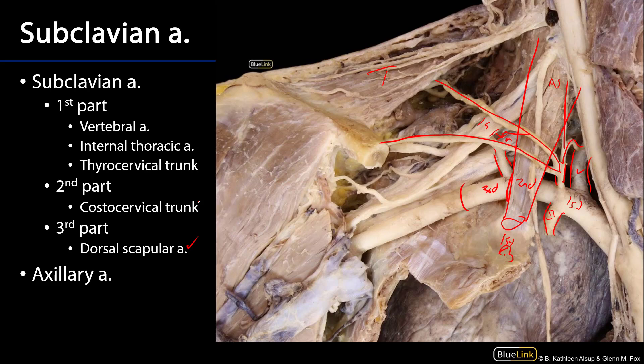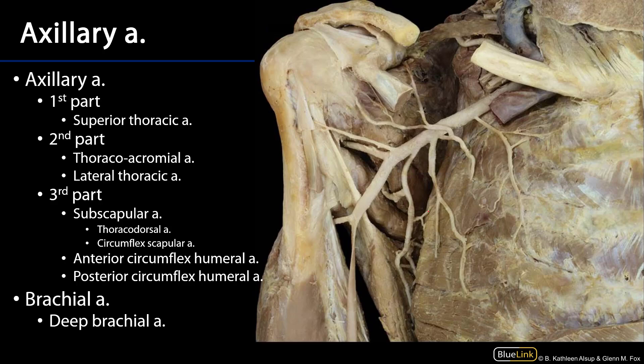The dorsal scapular artery is an important component of the scapular anastomosis. Beyond the lateral border of rib one is the axillary artery. The axillary artery traverses the axilla and has a special relationship with the brachial plexus — it is intermingled with elements of the brachial plexus. Just as the subclavian artery had three parts, the axillary artery also has three parts, designated by their relationship to the pectoralis minor muscle.